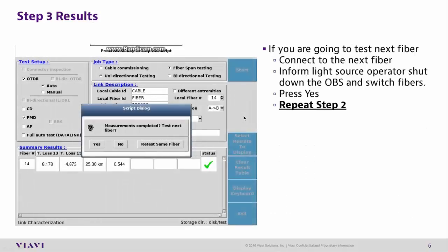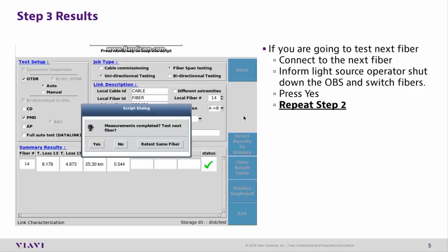Step 3: Results. If you're going to test another fiber, connect to the next fiber and inform the light source operator to shut down the OBS and switch fibers. Press Yes, then repeat Step 2. Results are automatically saved to a pre-designated folder. For more information on saving files, please watch the file handling video.